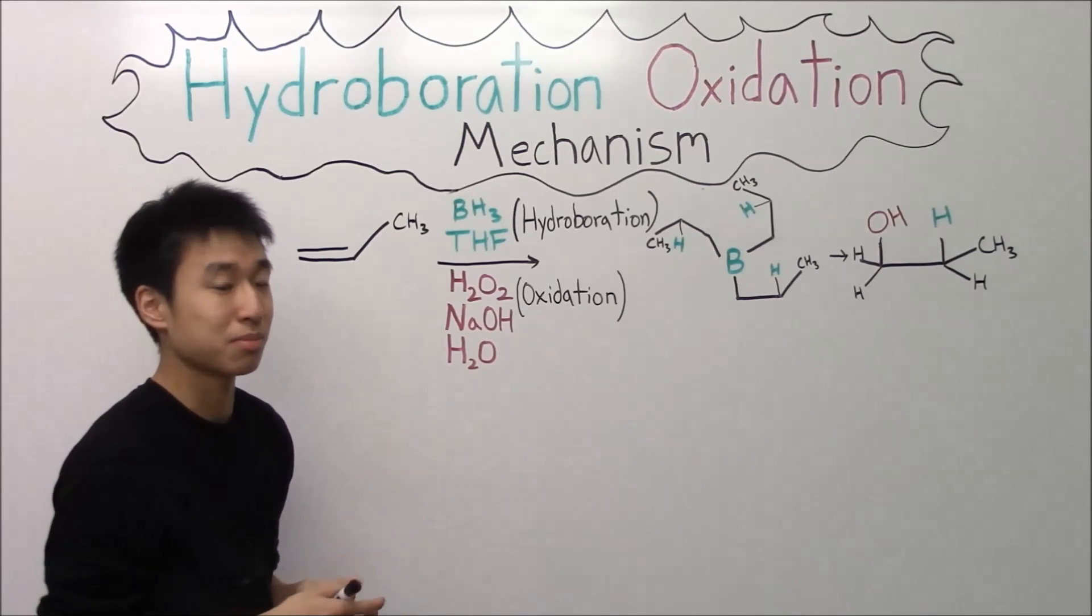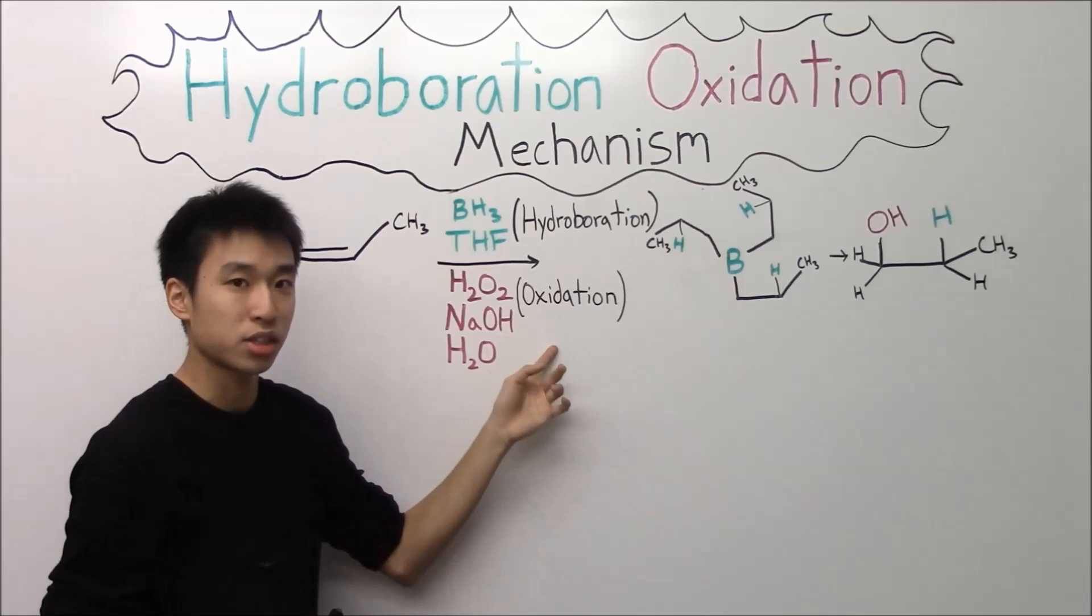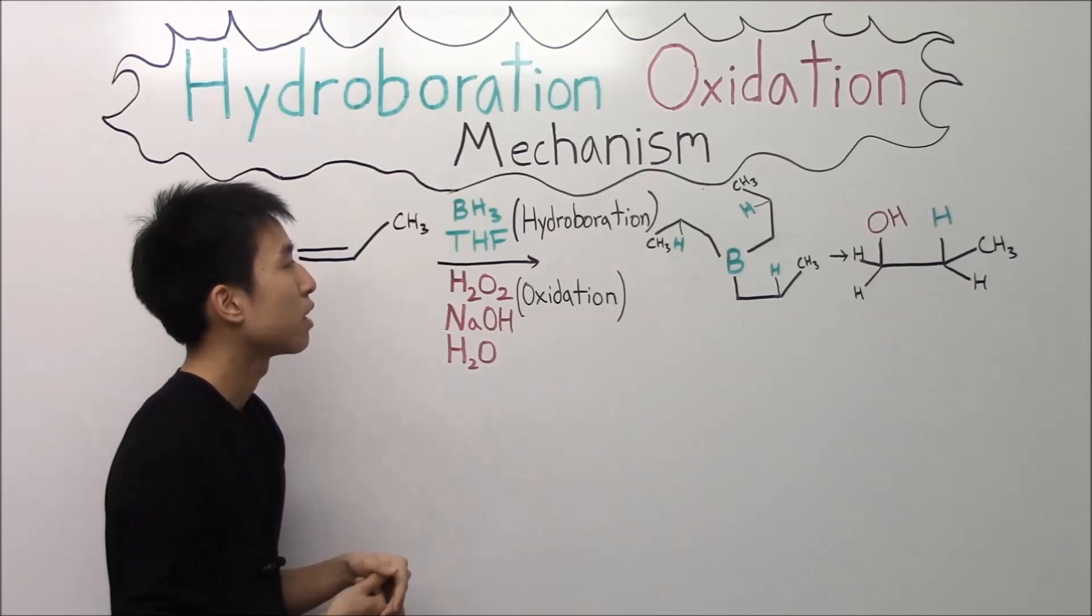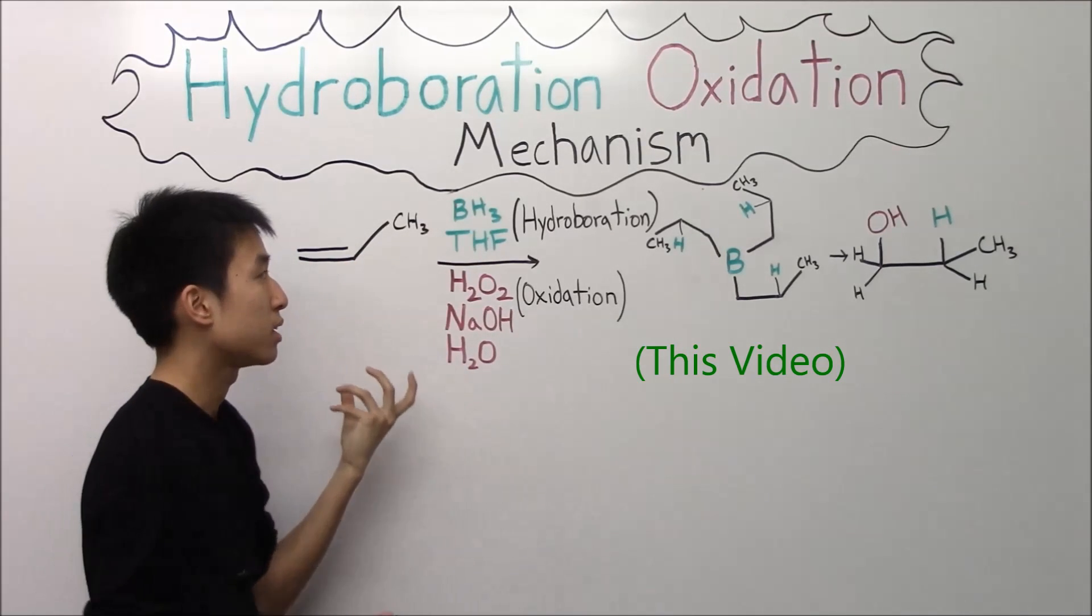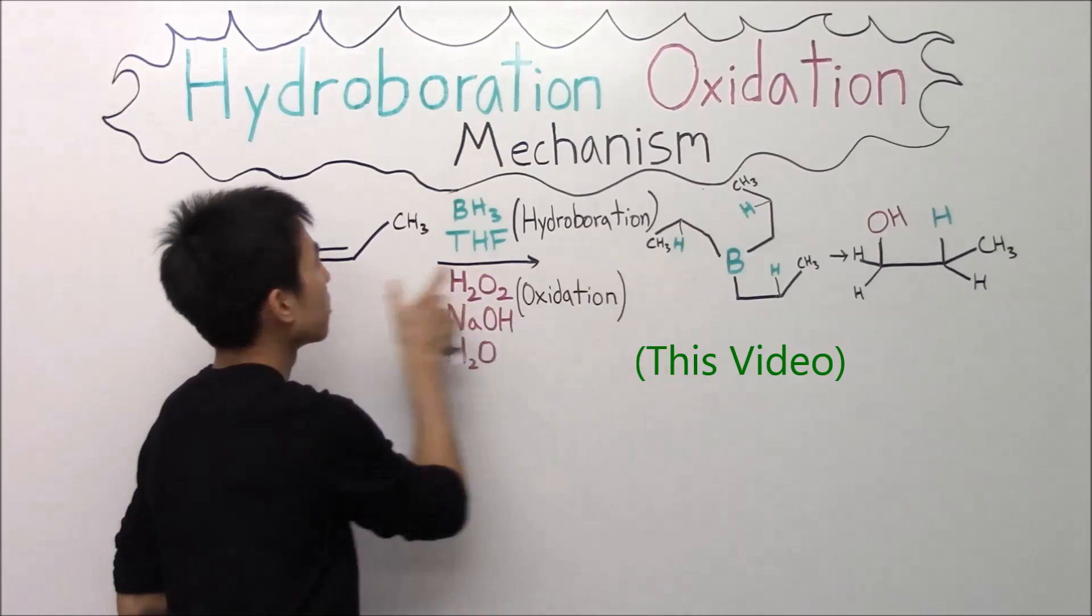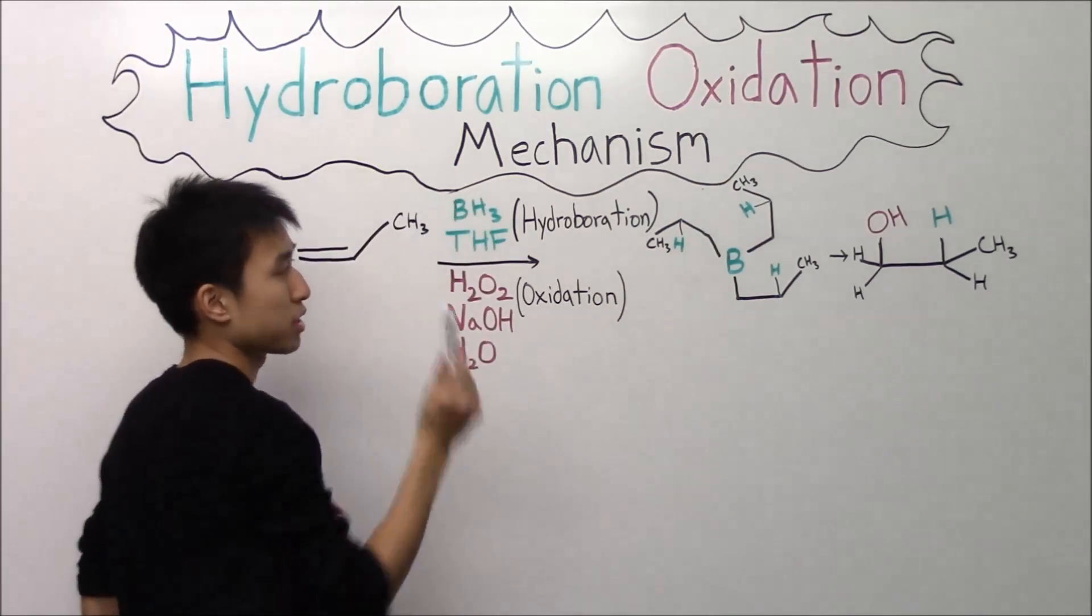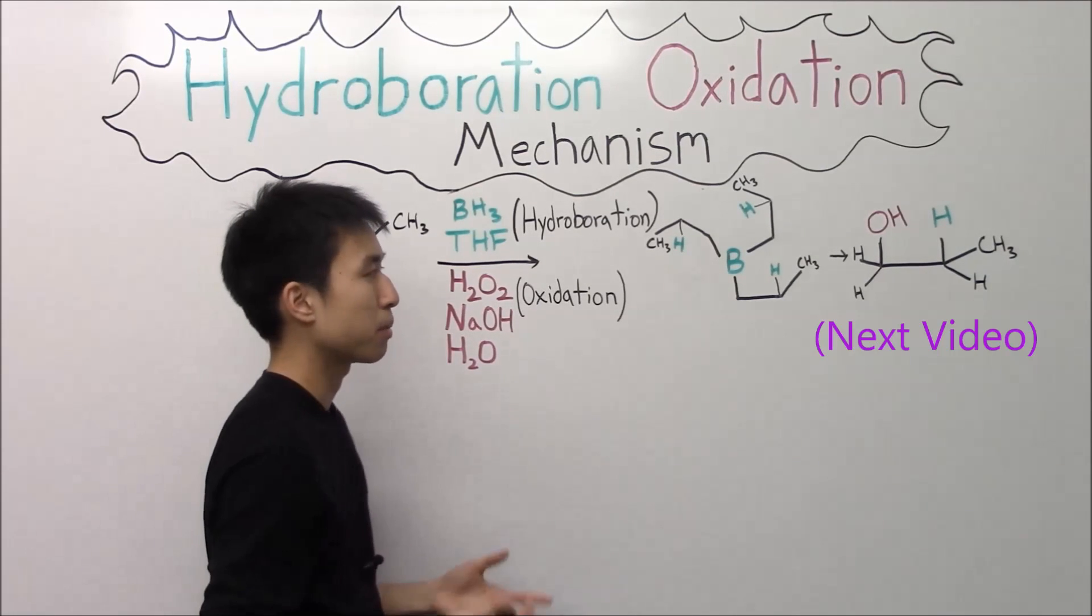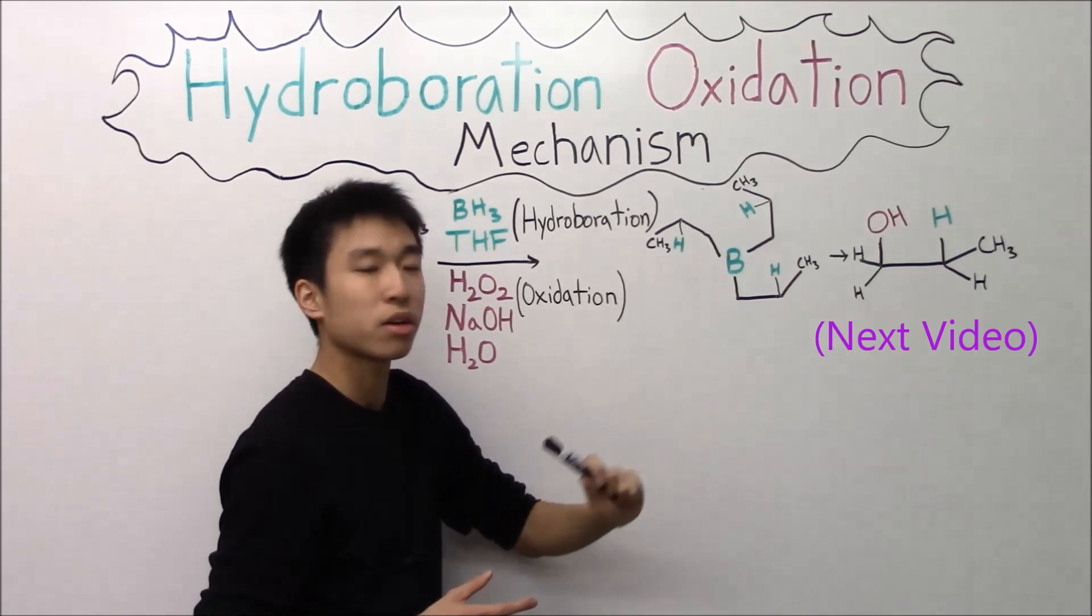So the hydroboration oxidation mechanism can basically be split up into two parts. The hydroboration part with BH3, THF, and the oxidation part with H2O2, also known as peroxide, NaOH, which is a base, and water, H2O. The first step, or first half of the mechanism, the hydroboration part, all you're basically doing is attaching boron onto three alkenes. It loses all three hydrogens to the three alkenes, and that's mainly it for that first step. The oxidation step, what you're basically doing is knocking off your boron and getting a hydroxy group onto your carbon.